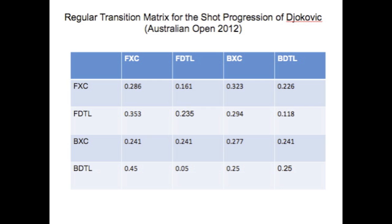Here is Djokovic's transition matrix. Once again, all the columns have fairly even values, especially as compared to the two gun players' matrices.